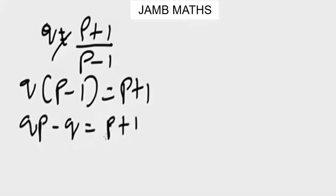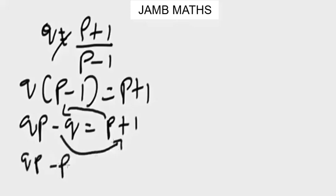And to do that, this p crosses to the left of the equals sign as negative p, and this -q crosses over and changes to +q. So you're going to have qp - p = 1 + q.